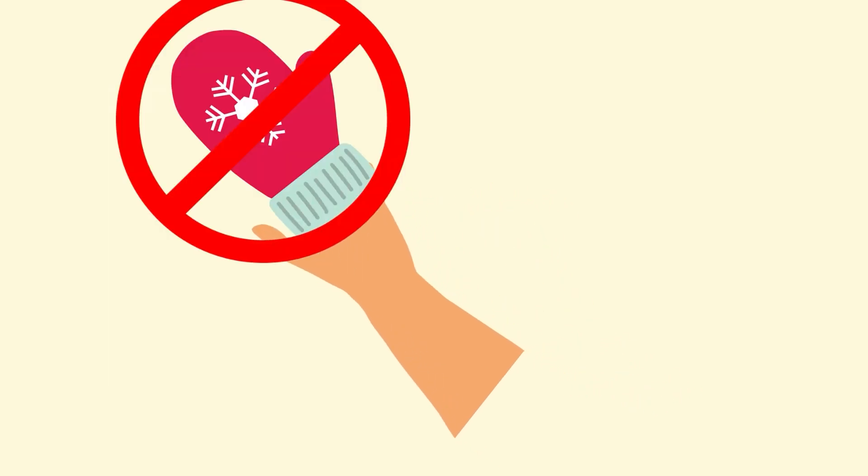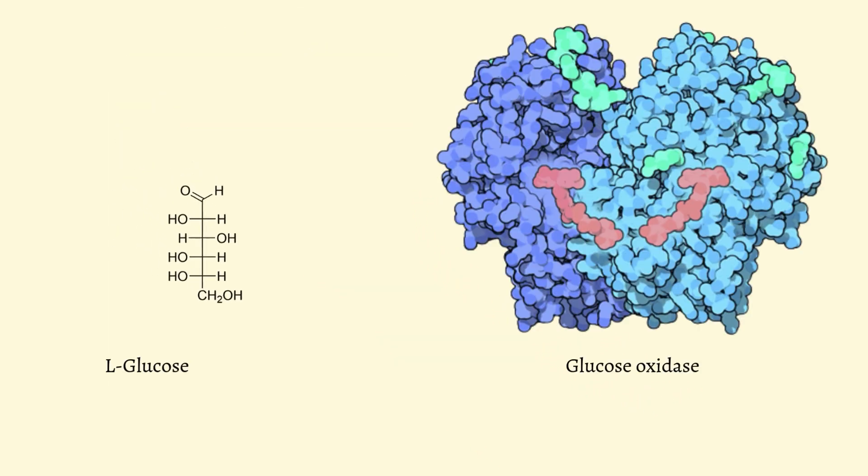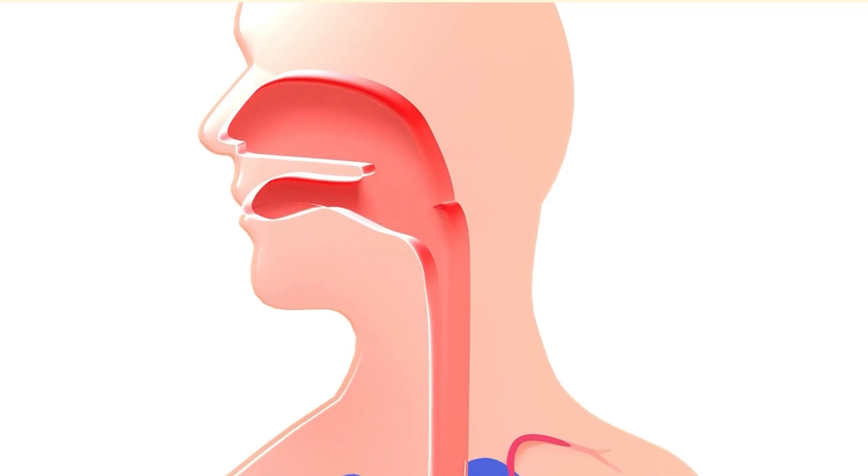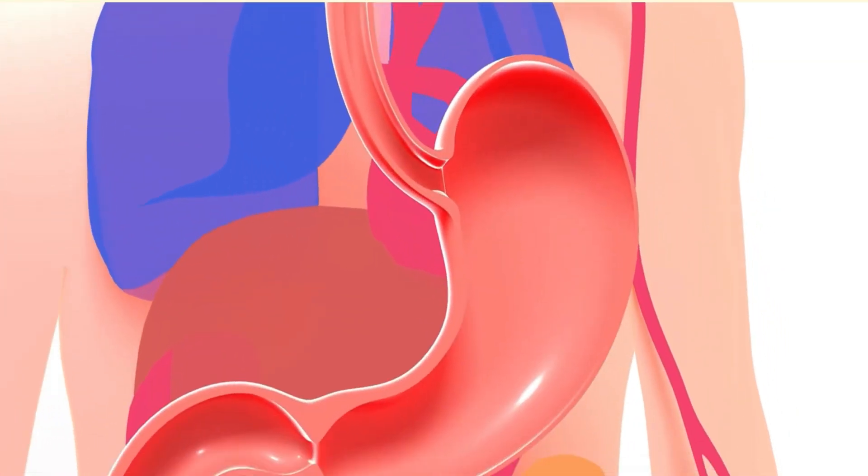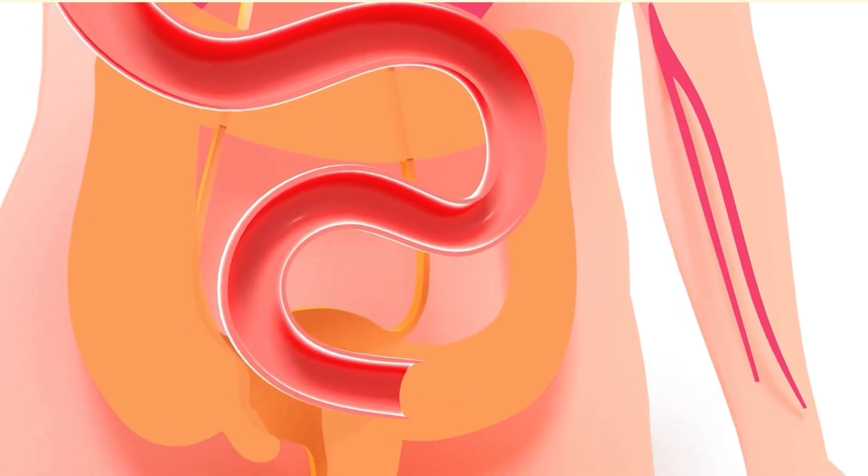Imagine trying to put on a left-handed glove with your right hand. That's what happens when our enzymes encounter L-Sugars. The fit just isn't right, so L-Sugars pass through our bodies without being broken down for energy.